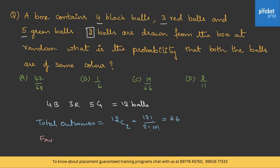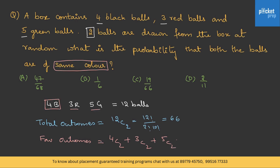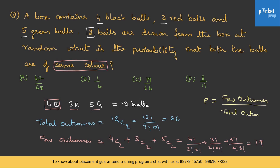Next we calculate favorable outcomes — the balls selected should be of the same color. Both could be black, both red, or both green. From 4 black balls choosing 2 is 4C2; from 3 red choosing 2 is 3C2; from 5 green choosing 2 is 5C2. That is 4 factorial by 2 factorial into 2 factorial, plus 3 factorial by 2 factorial into 1 factorial, plus 5 factorial by 2 factorial into 3 factorial, which turns out to be 19. Probability is favorable outcomes by total outcomes, that is 19 upon 66 — option C.